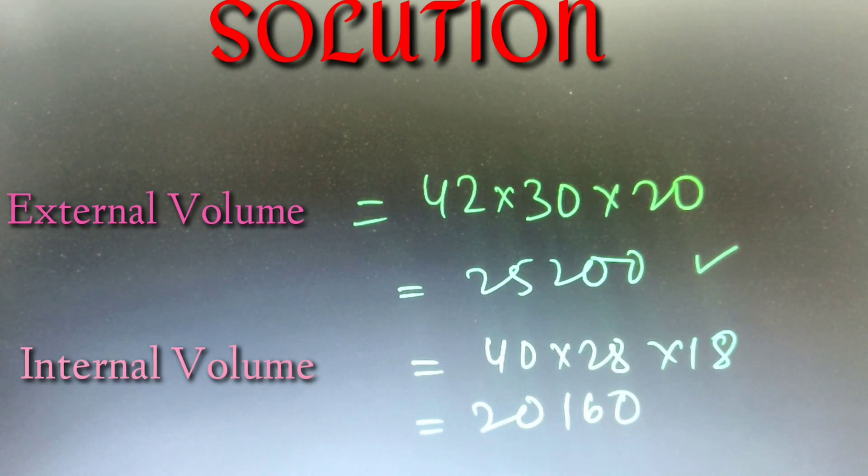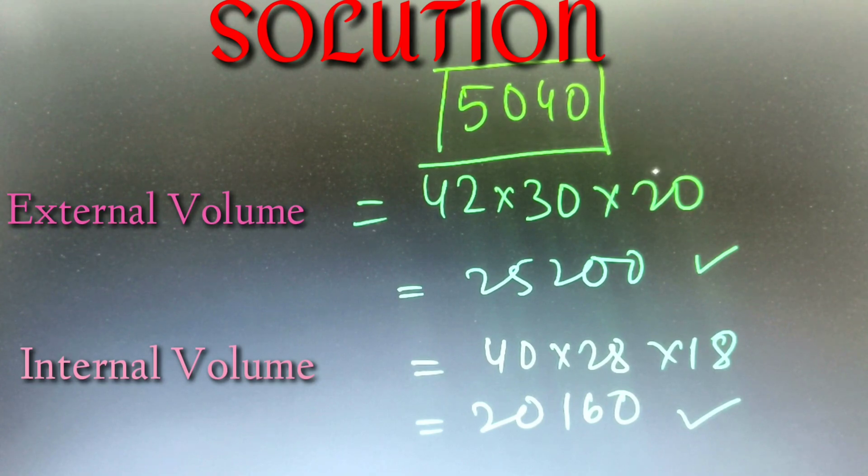We have the external volume and the internal volume. We subtract the internal volume from the external volume. Upon subtraction, the final value is 5,040 centimeter cube. So the volume of the wood is 5,040 centimeter cube.